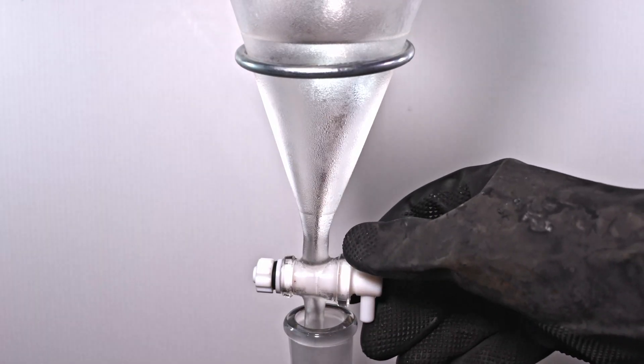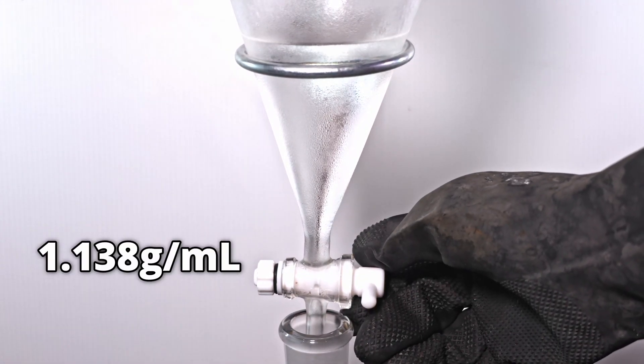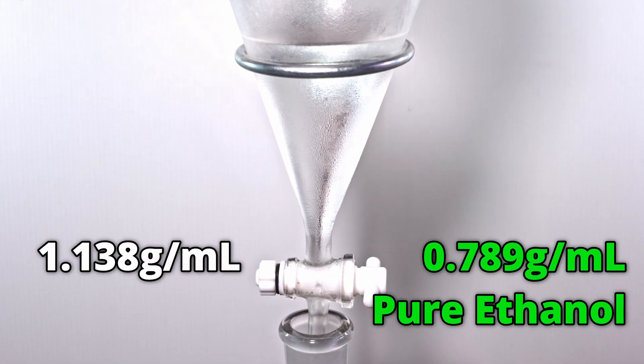However, the top layer actually has a density of 1.138, meaning there's still a decent amount of ethyl bromide in there.